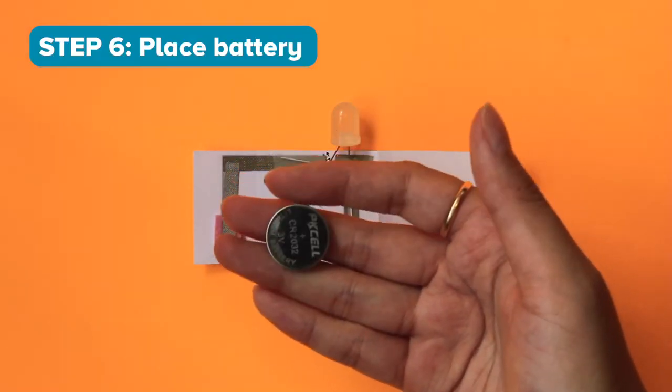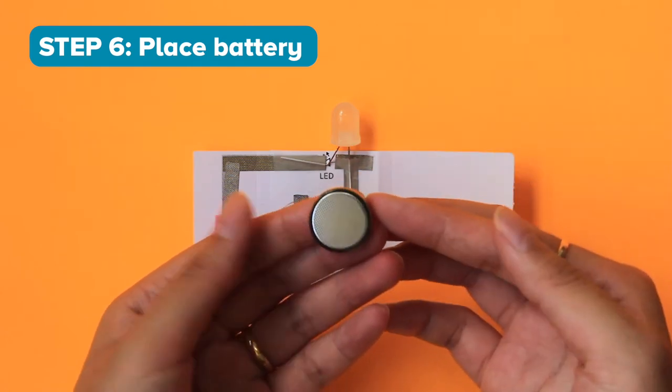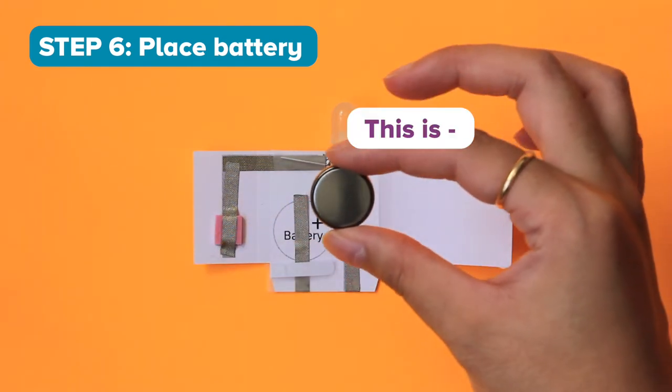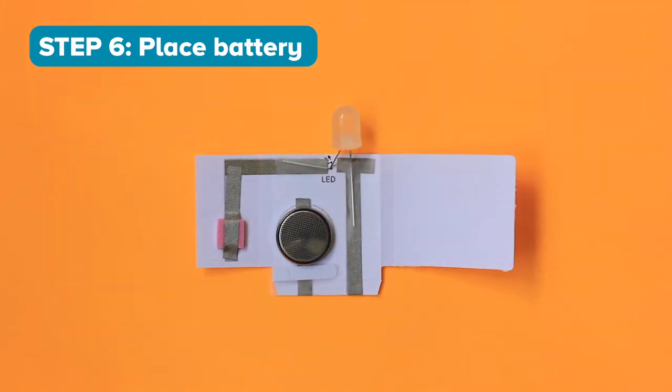Step 6. This is your coin cell battery. This is the positive side of your battery. And if you flip it over, this is the negative side of your battery. Place your battery positive side down like this.